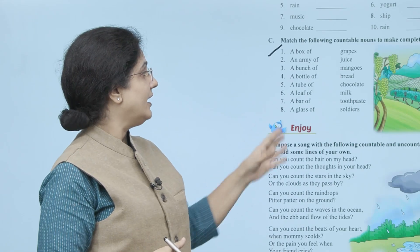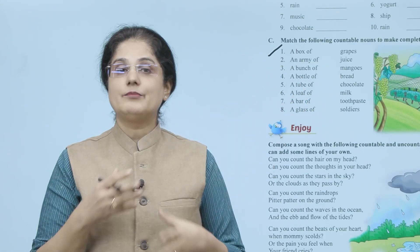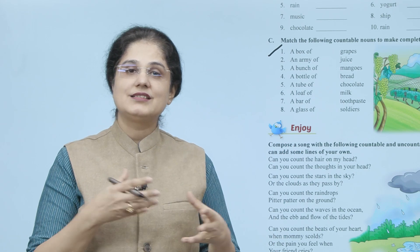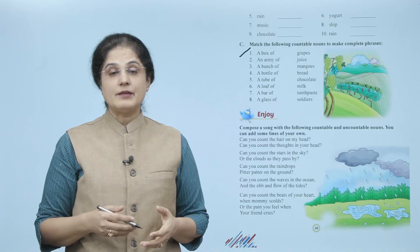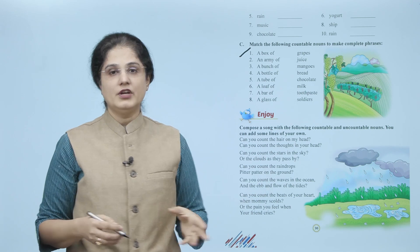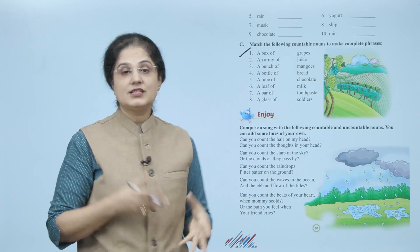So aapne match karna hai ki kaun sa kis ke saath appropriate hai ya sahi sentence banayega. For example, agar main aapko yahan pe second dekho: 'an army of' - toh yeh yahan pe kis ke saath sabse zyada suitable hai? An army of soldiers. Is tarah se aap baaki sab ko match karein.